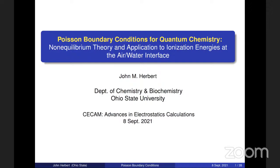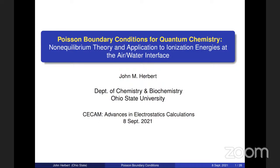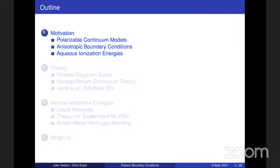Thanks very much for the introduction. This is only my second CCAM workshop and the first one was only last week. The important part of this talk is that I'm going to describe putting arbitrary continuum boundary conditions around a quantum chemistry calculation based on Poisson's equation. I'll spend maybe a third of my talk motivating why we want to do that, then talk about the theory and our generalized Poisson equation solver, and spend the last part on an application: the physical chemistry of ions at the air-water interface and photoelectron spectroscopy.